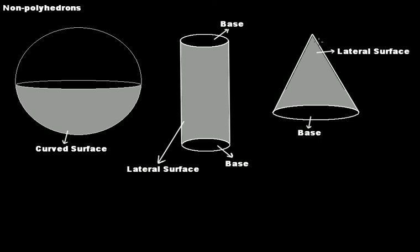Here we have a cone — like an ice cream cone. Its base is a circular shape, and it has a rounded lateral surface. In both a cylinder and a cone, the rounded parts are called lateral surfaces. Since the cone is not made up of polygons, it is also a non-polyhedron diagram.